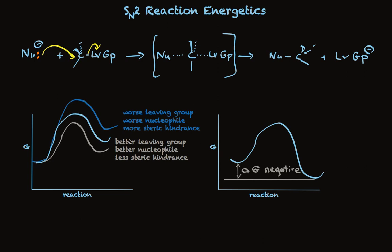An endergonic reaction is unfavorable — we have to add energy. An exergonic reaction is favorable — it releases energy. So the thermodynamics is totally obvious from the energy diagram, and the rate constant component that is changed by changing the reactant parameters is simply changing the activation energy, which we can also see readily from looking at the energy diagram of the reaction.